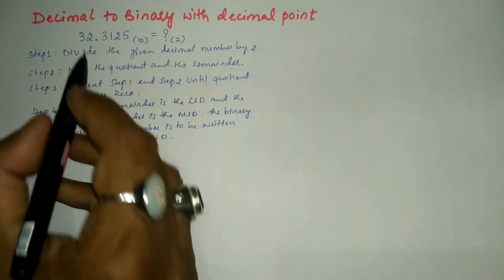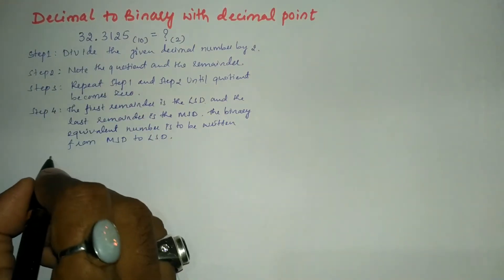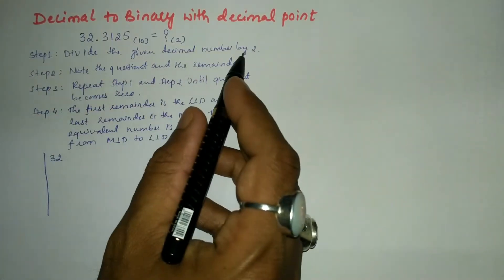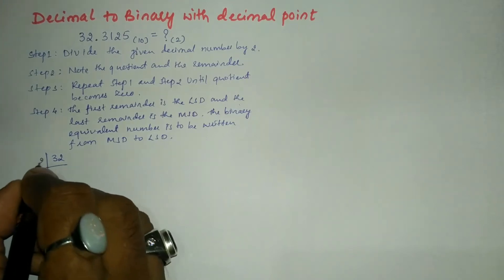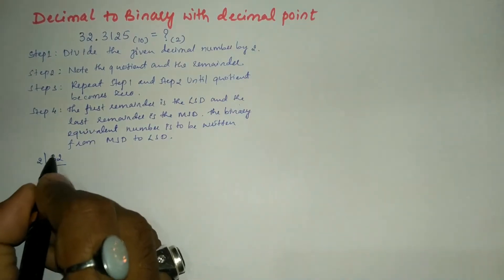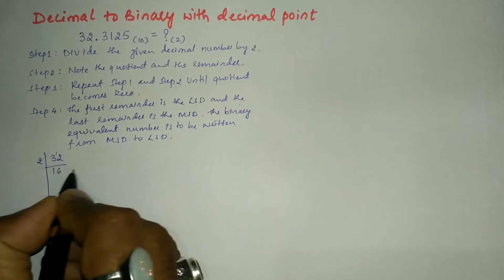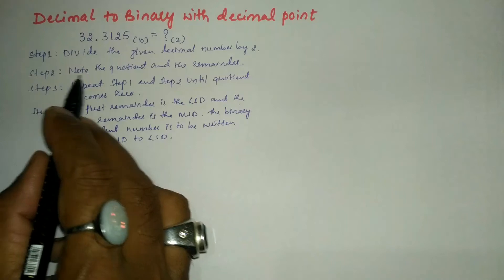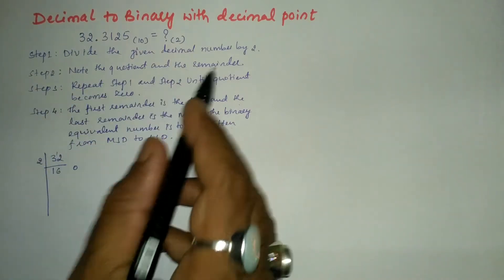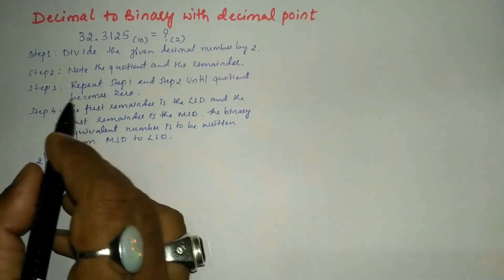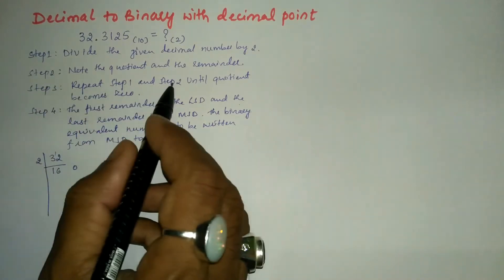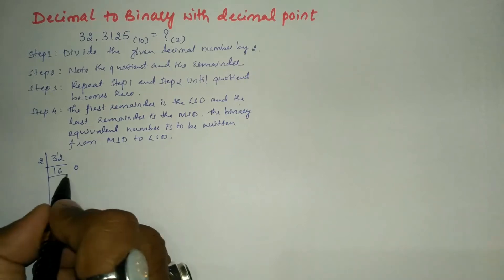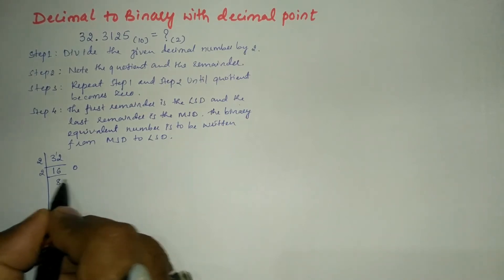Now let us take 32 and follow step 1 — divide the given decimal number by 2. 32 ÷ 2: remainder is 0, quotient is 16. We repeat since quotient is not 0. 16 ÷ 2: remainder is 0, quotient is 8.